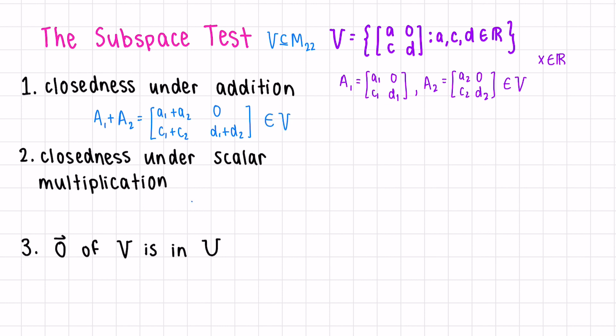Next, let's check closeness under scalar multiplication. Multiplying x, our variable, by a1. So when we multiply by a scalar, it goes to each term. So we get x a1, 0 times any scalar is still 0, x c1, and x d1. And because x, a, c, and d are all real numbers, this is also a matrix in our set V.